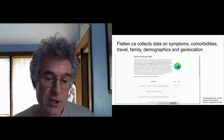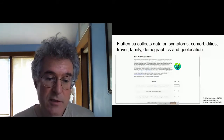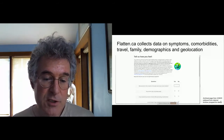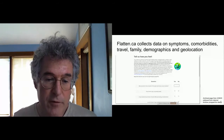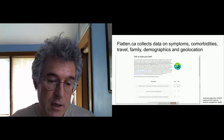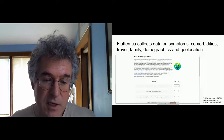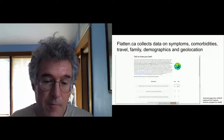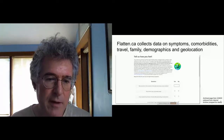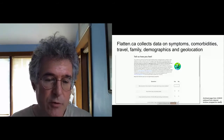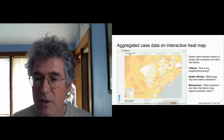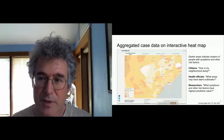It was a patient-initiated research portal. Anybody could log in and enter their symptoms — whether they had a cough, a fever — family history, demographic information, and very importantly, the first three characters of their postal code, which gives you a region several city blocks in size, a few hundred families. There were also ways to enter COVID-19 testing results. This data was collected and put onto an interactive heat map, so you could see where there were clusters of cases or people with suspicious symptoms. Darker areas indicated clusters of people with symptoms and risk factors.